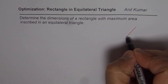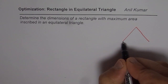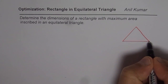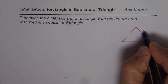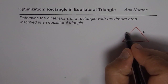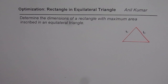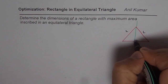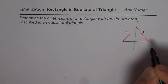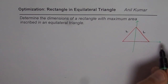Let us first sketch one equilateral triangle. Let us say that each side of this triangle is L units. If I drop a perpendicular, what I will do is form a Y axis along the perpendicular and an X axis along the base.